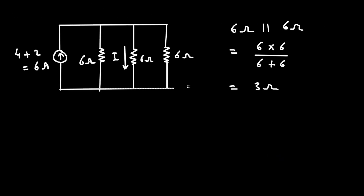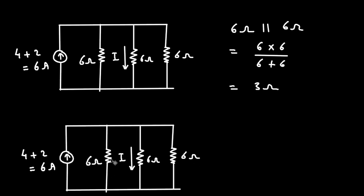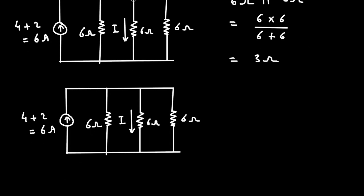Now let's take this circuit again. We will replace these two resistances with a single resistance of 3 ohm, so let's remove this resistance and this resistance value will change to 3 ohm.